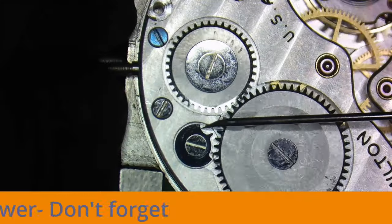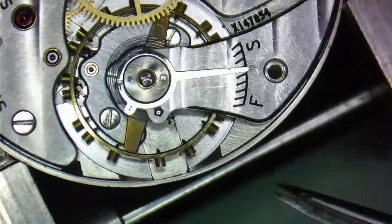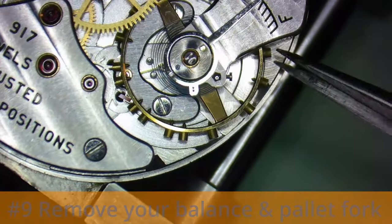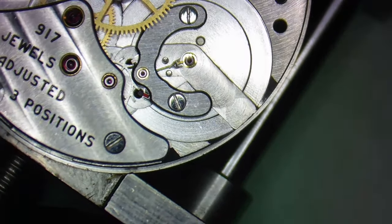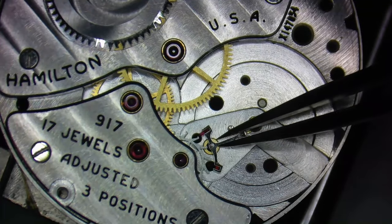Before you take your first screw out, don't forget to let down the power to the mainspring. Once the power is let down, remove the balance wheel and pallet fork before you start removing any other systems in the watch and put them in a secure place. This will just lessen the chances of you damaging them during your disassembly process.